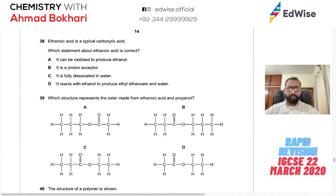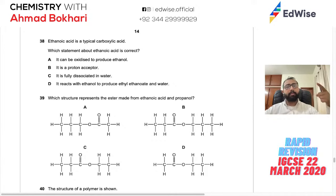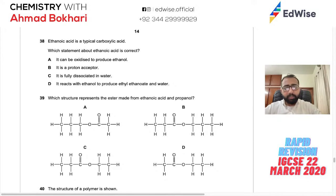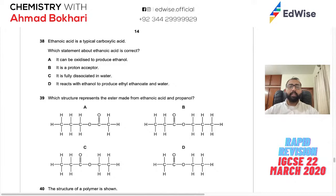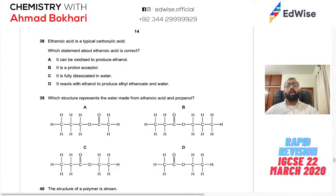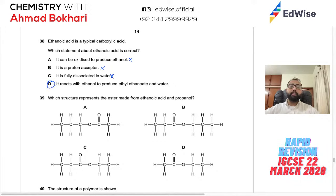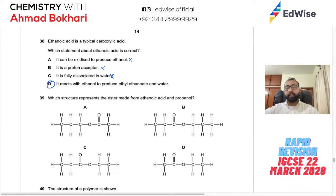Question 40: Ethanoic acid is a typical carboxylic acid. Key properties: it's a weak acid (partially dissociates), it's a proton donor (not acceptor — bases are proton acceptors), it does not fully dissociate. It reacts with ethanol to form ethyl ethanoate (esterification). The statement 'it can be oxidized to produce ethanol' is wrong — you reduce ethanoic acid to get ethanol. The correct answer is that it reacts with ethanol to produce an ester. Answer: D.